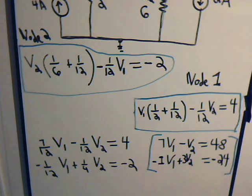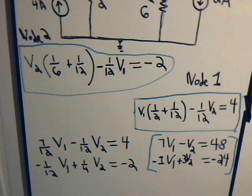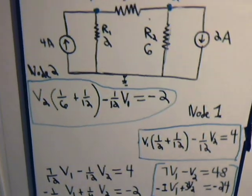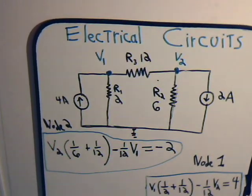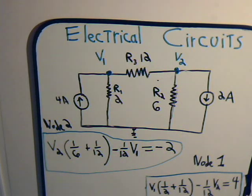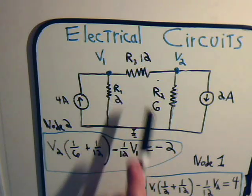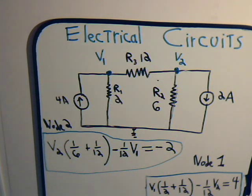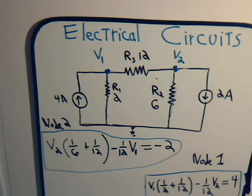These are the two nodal equations we end up with — two equations and two unknowns. We don't have time to solve for V1 and V2 in this video, so come back and join us in the next video where we'll find what V1 and V2 are. With that information we can figure out the currents flowing through each of the resistors in the circuit. Thank you very much.